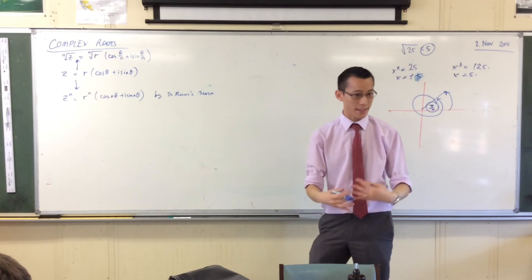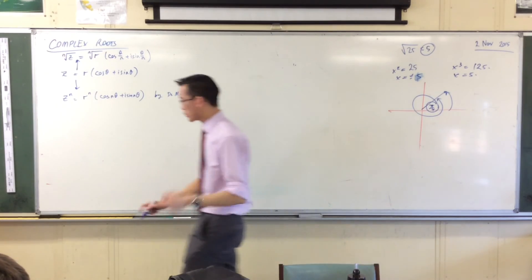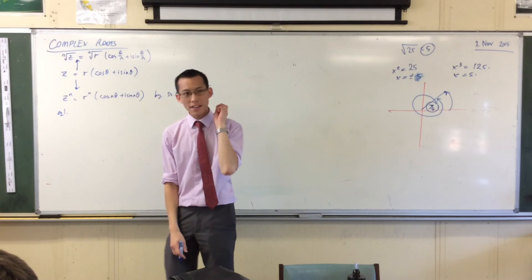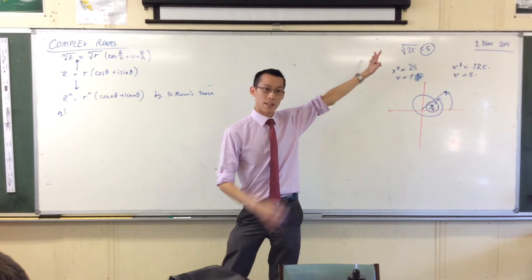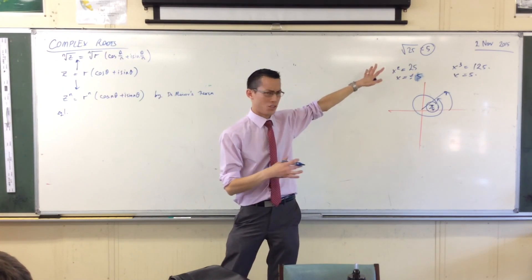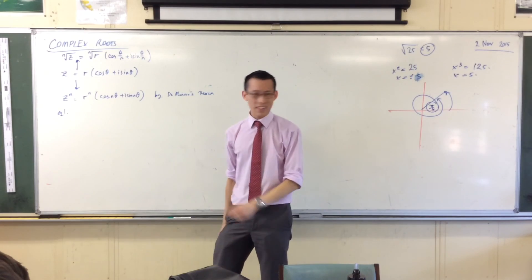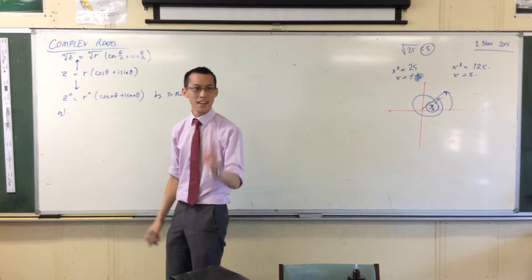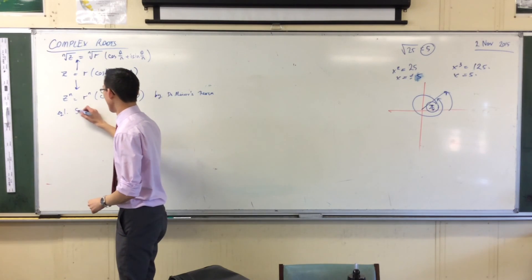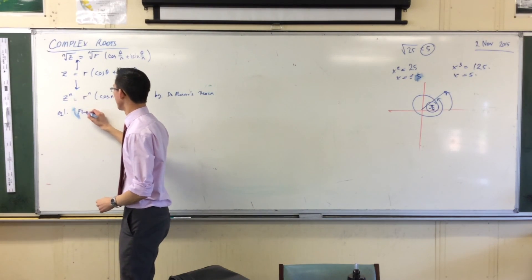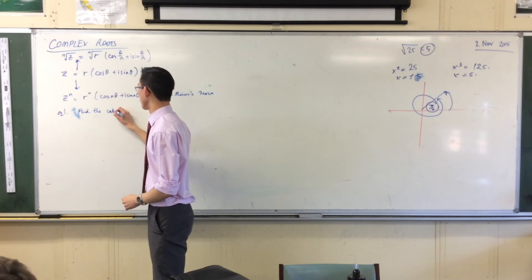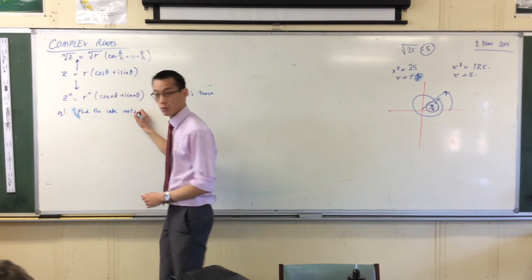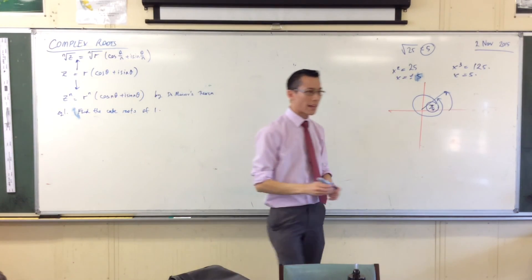So to help unpack this, I'm going to show you an actual example. Let's find the cube root, because that's the one where that's the first time we're encountering this issue of how many roots are there. Let's find just the cube root of a nice simple complex number, like say one. Find the cube roots, and you'll notice I am saying plural, of one.